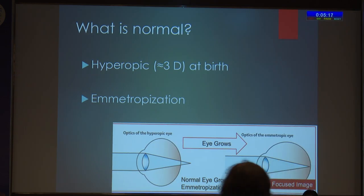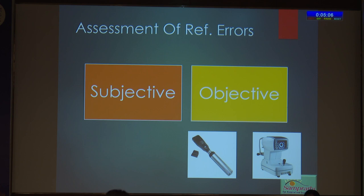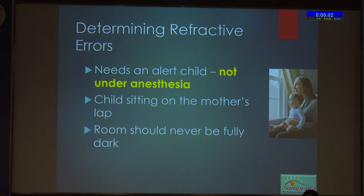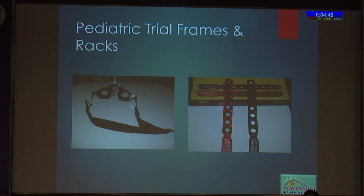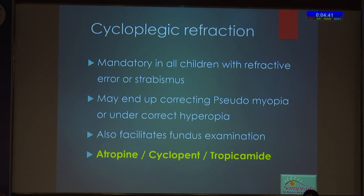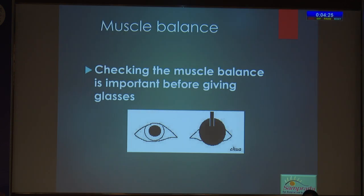We all know children are born with hypermetropic error and as they grow older, emetropization happens. Assessment of refractive error is mainly subjective and objective, but in children we rely more on objective methods because subjective methods may not be reliable. Determining the refractive error needs an alert child — refraction under anesthesia is the last resort — because if you're refracting an alert child, you're refracting the fovea; otherwise you may refract some other part of the retina.